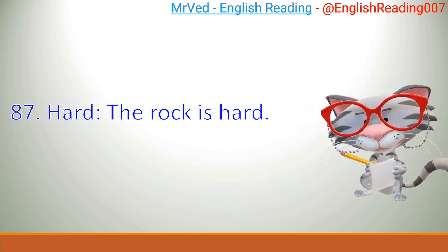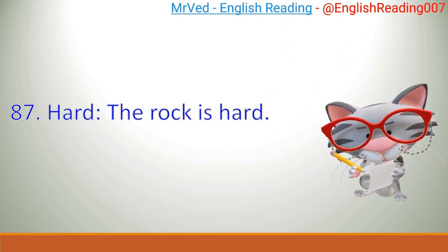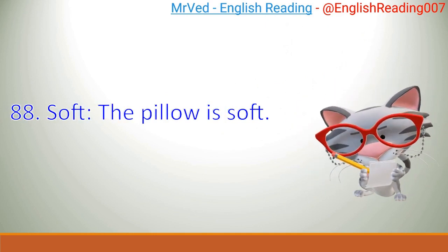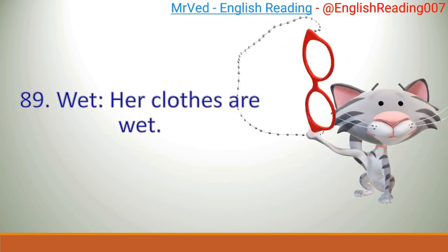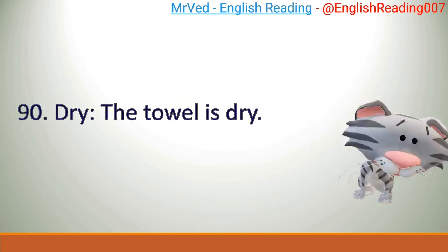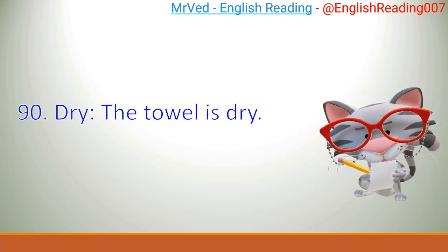87. Hard. The rock is hard. 88. Soft. The pillow is soft. 89. Wet. Her clothes are wet. 90. Dry. The towel is dry.